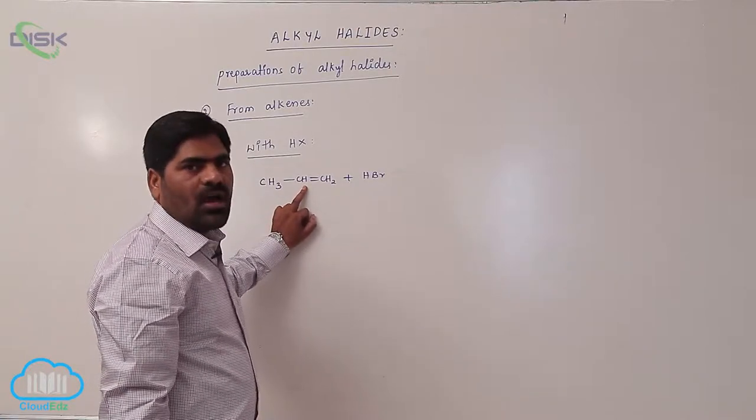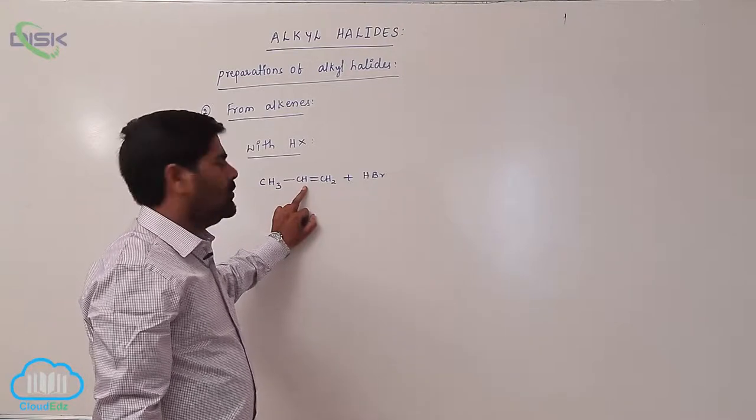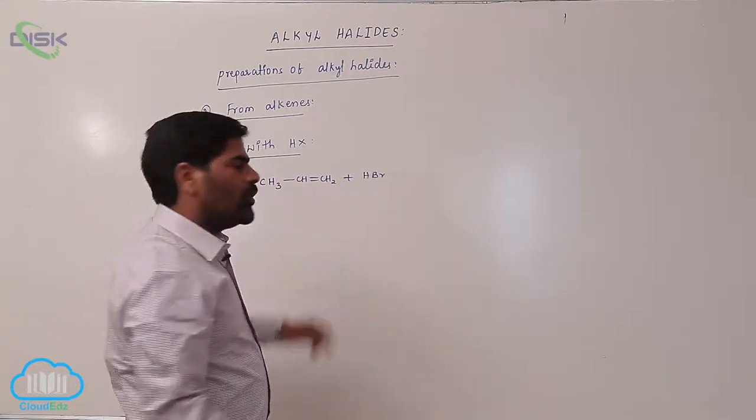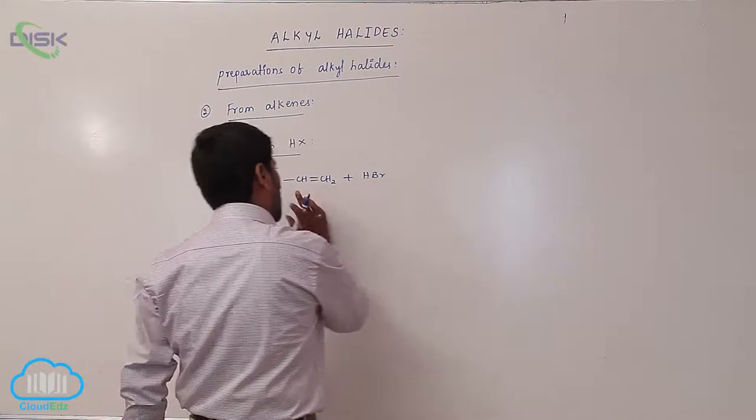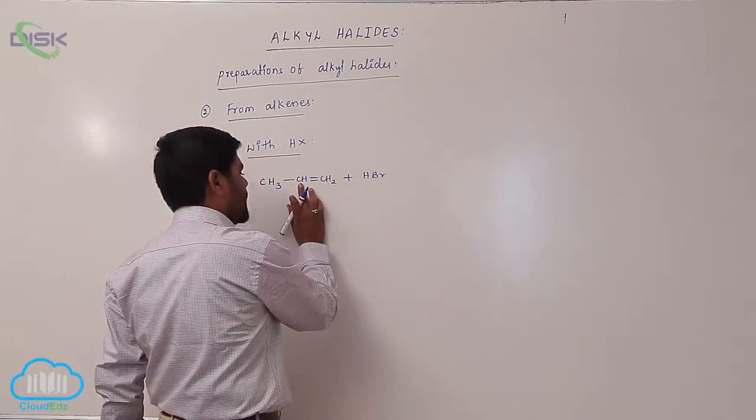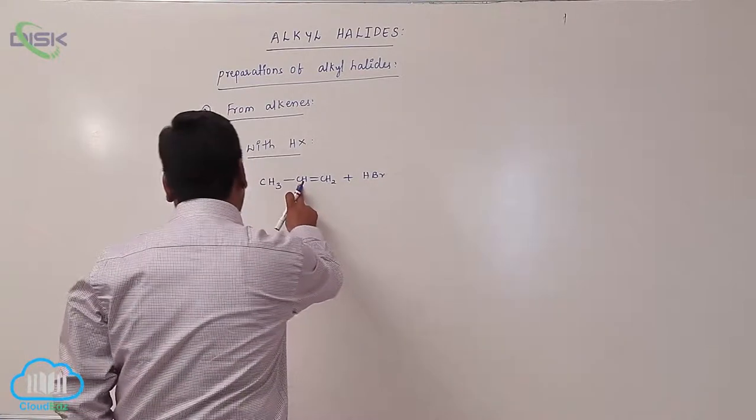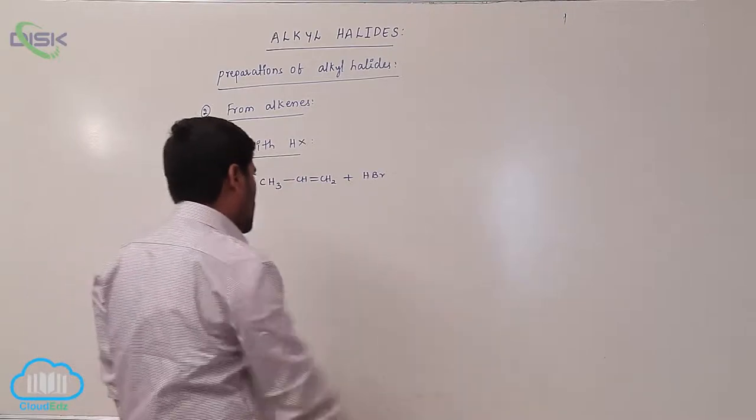This particular rule is known as Markovnikov's rule. The Br- addition always takes place at the double bond carbon atom which contains the lesser number of hydrogens.